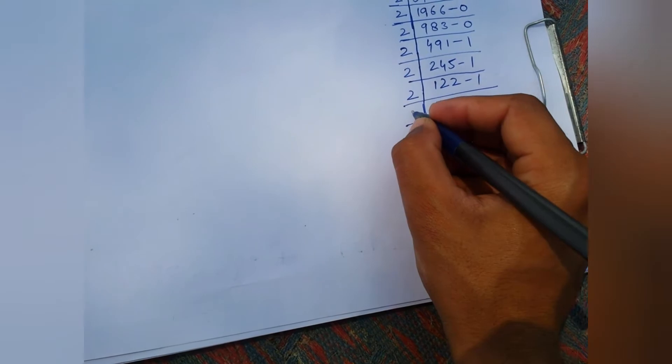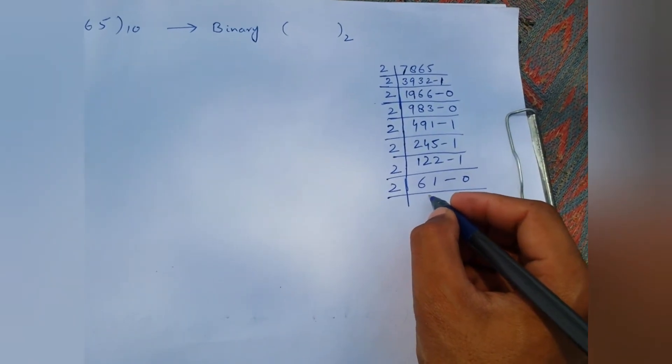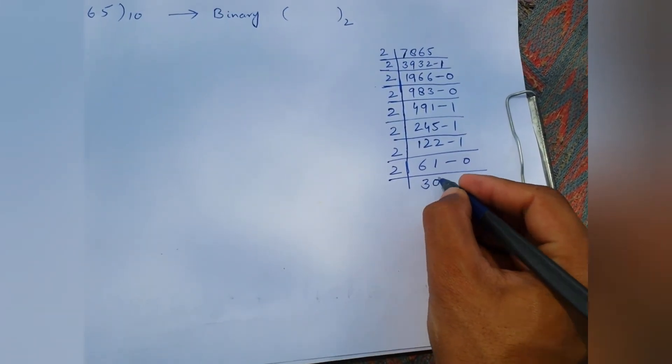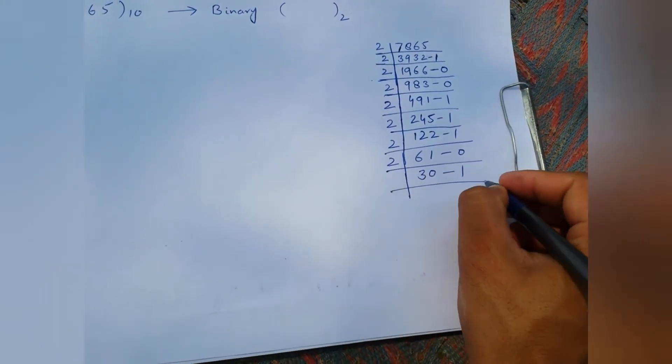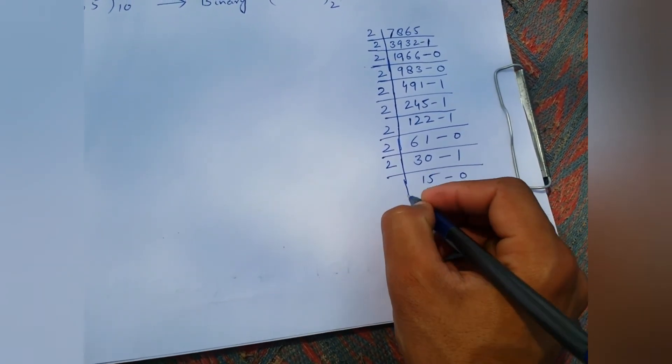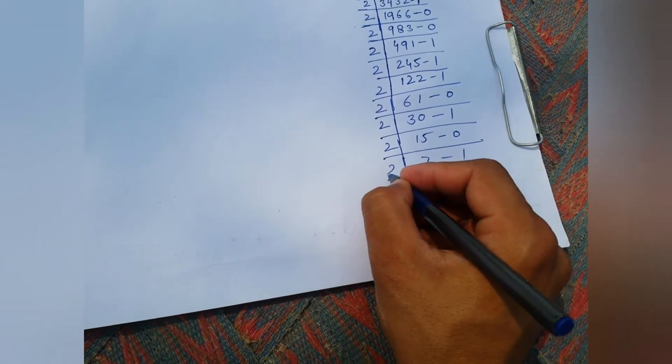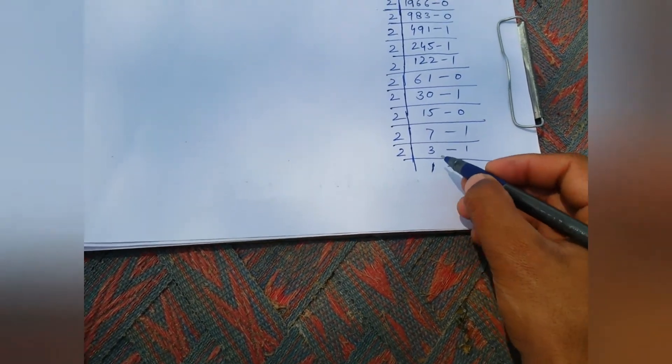The division process continues: we obtain 491, divide by two to obtain 245 with remainder one; divide to obtain 122 with remainder one; divide to obtain 61, then 30 with remainder one, then 15 with remainder zero, then 7 with remainder one, then 3 with remainder one, and finally 1 — a digit less than two — so our process is complete.